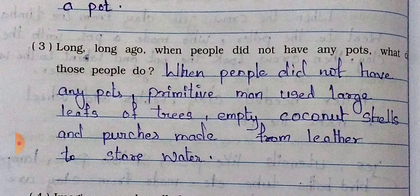Answer: When people did not have any pots, primitive men used large leaves of trees, empty coconut shells, and purses made from leather to store water. So these are the kinds of things they used when they didn't have pots to store water.